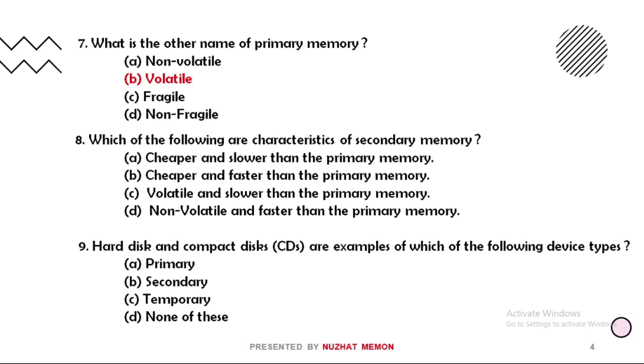Eighth: which of the following are characteristics of secondary memory? The correct option is option A, that is cheaper and slower than the primary memory. Nine: hard disk and compact disk, that is CDs, are examples of which of the following device types? The correct option is option B, that is secondary.